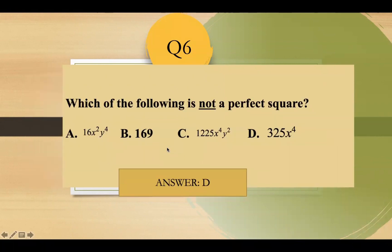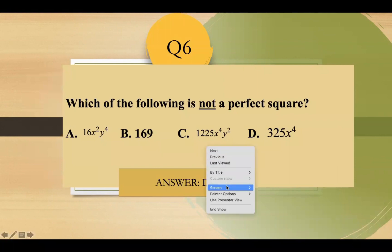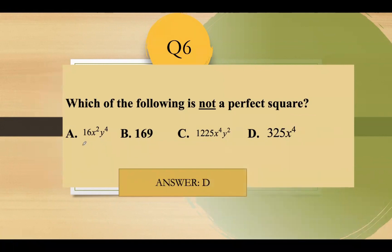Question number 6: which of the following is not a perfect square? A perfect square has a perfect square root. Numbers like 169 and 1,225 are perfect squares. The answer is 325 — it does not have a perfect square root, so it is not a perfect square. Letter D.